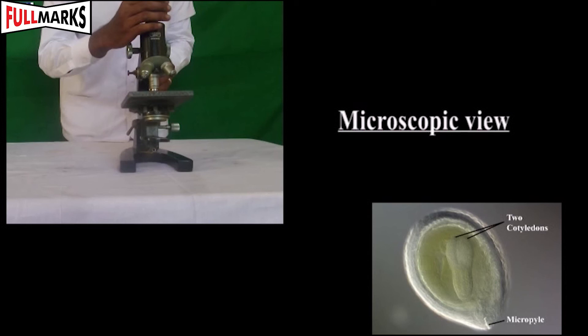This is a dicot seed, meaning it has two cotyledons. The embryo axis shows the radicle and the plumule. The radicle is the future root and the plumule is the future shoot. Food is stored in the cotyledons.